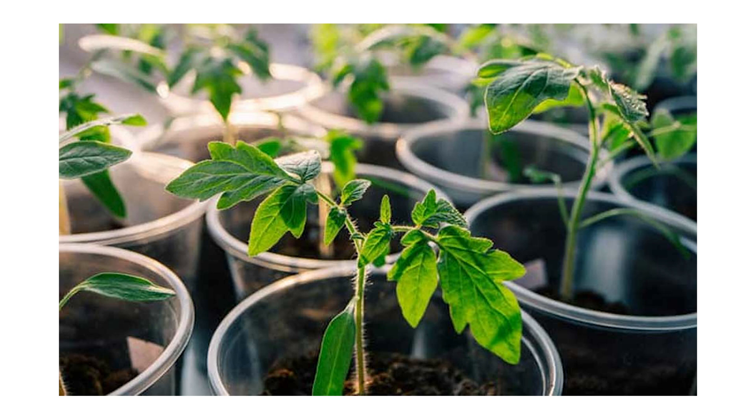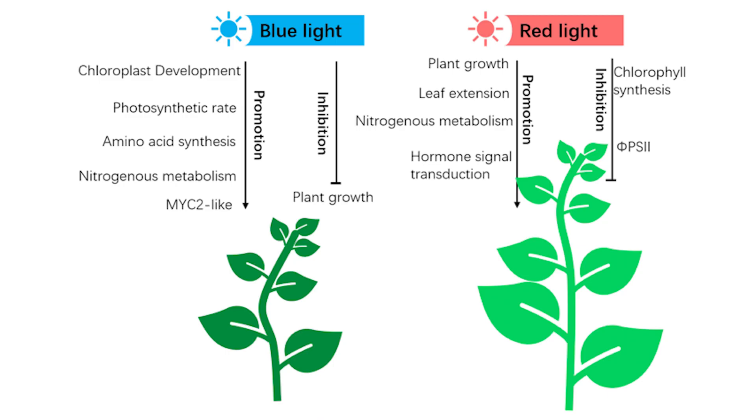We know blue light and red light are very important, but when do we use them, how much, and what about the other lights on the spectrum like UV light and infrared light? Blue light is great for when you're starting your plants, when they're developing their leaves and their initial growth. If you keep blue light on the plant the entire time, it'll come out very bushy and small but with a lot of leaves. Whereas red light, if you leave it on a plant the entire time, it'll be very lanky and tall and probably not have a lot of vegetative growth.